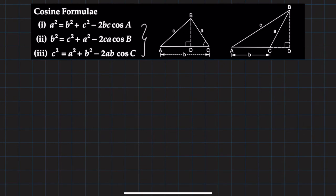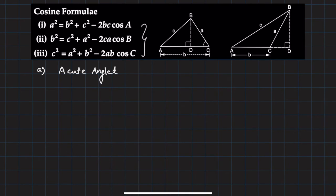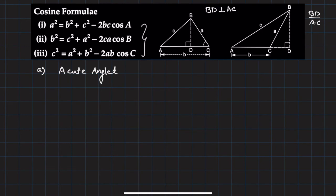Now how do we prove it? There could be two cases: one is when the triangle is an acute-angled triangle, and the other when it is an obtuse-angled triangle. We'll prove this for both cases. Let's first prove Case A — the acute-angled triangle. In the diagram, ABC is a triangle where small a, b, c depict the sides opposite to angles A, B, and C respectively. I have dropped a perpendicular from B onto AC, so BD is perpendicular to AC.